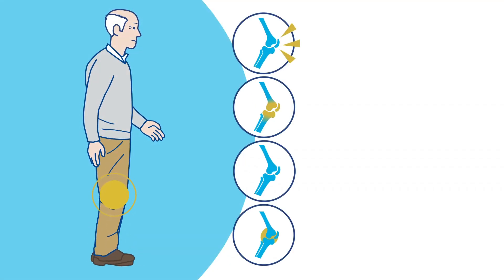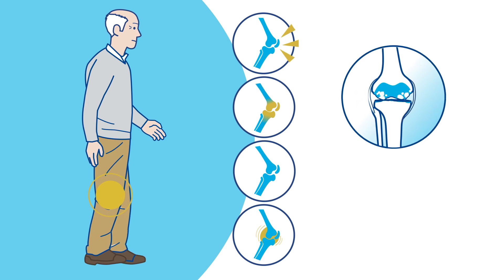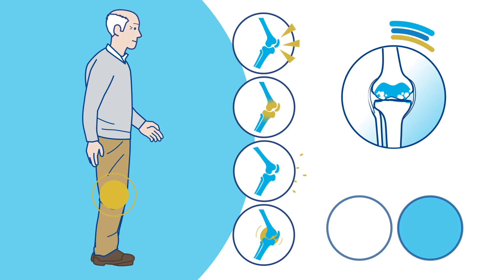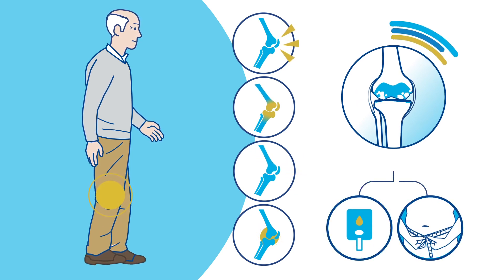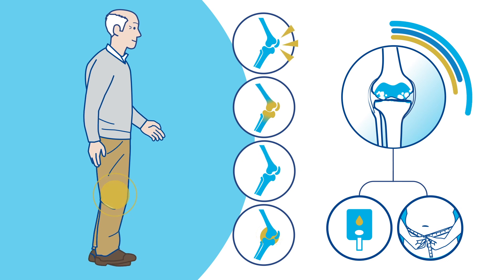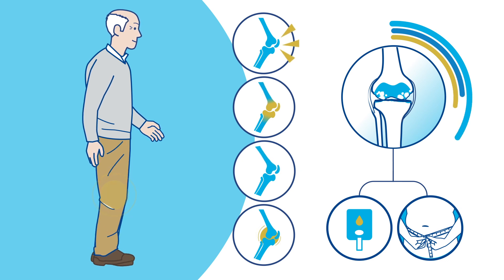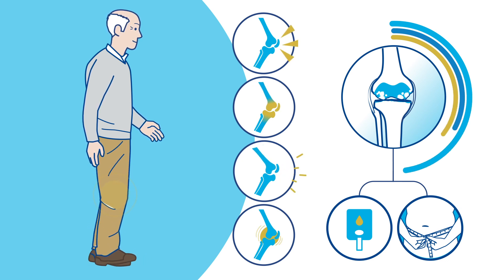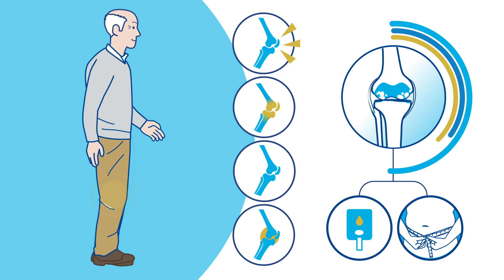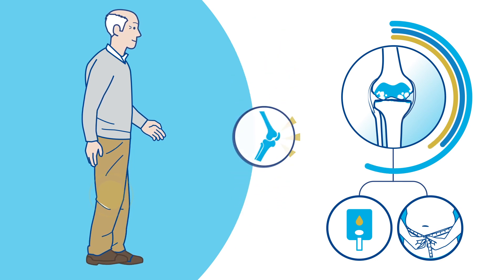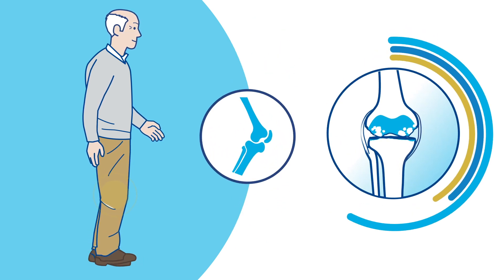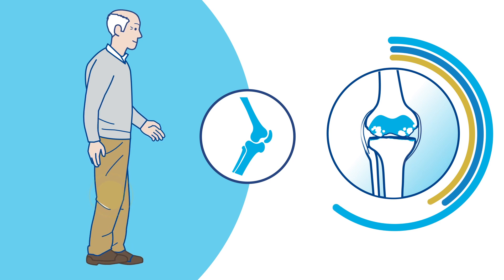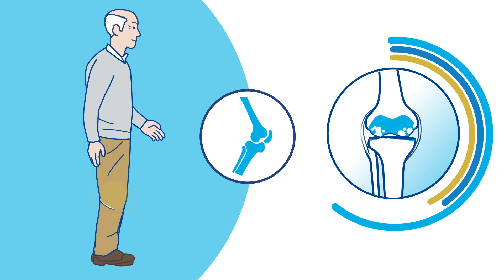Changes caused by osteoarthritis cannot be reversed, and symptoms can vary widely. Research shows that people's arthritis progresses at different rates depending on their overall health and other factors, like if they have diabetes or are obese.